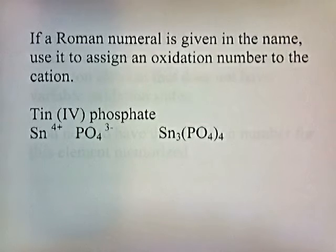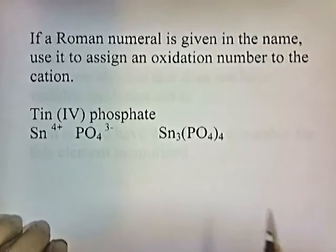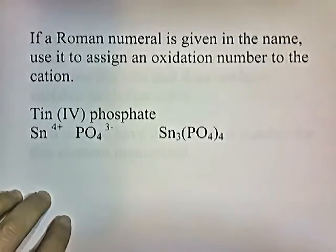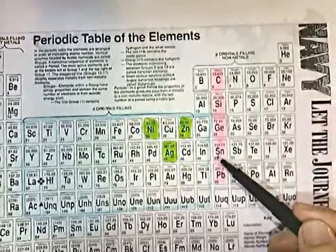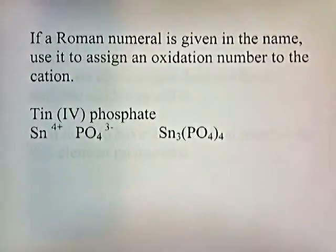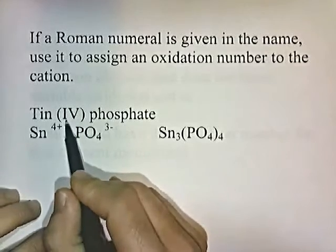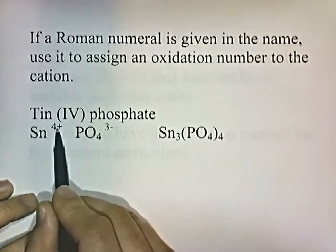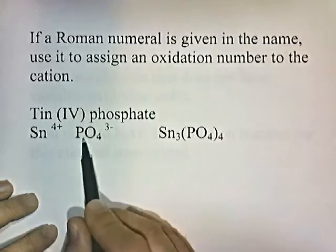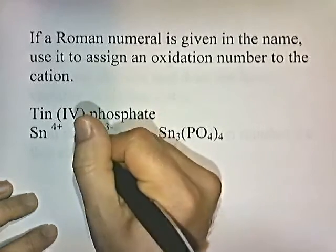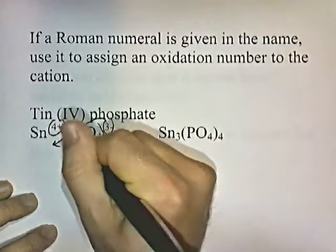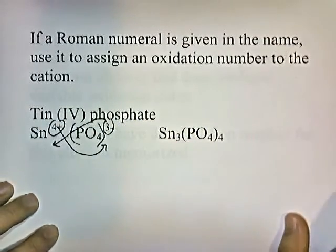If a Roman numeral is given in the name, use it to assign an oxidation number to the cation. For tin 4 phosphate: tin is a group 4A element — the name tells us the oxidation state is plus four. Phosphate, PO4, has a negative three charge, which you must memorize. Crisscrossing the numbers gives Sn3(PO4)4.